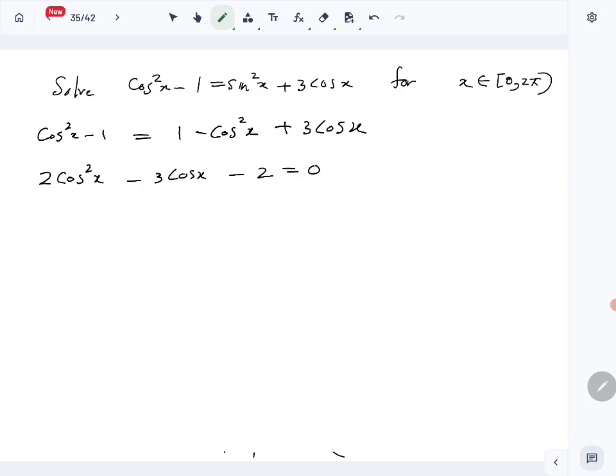You get 2 cos squared x minus 4 cos x, so minus 2 cos x, right? Equals 0. So from here you get cos x equals minus 1/2.